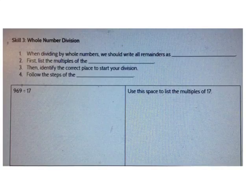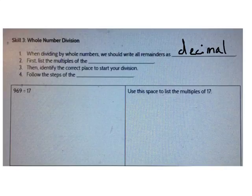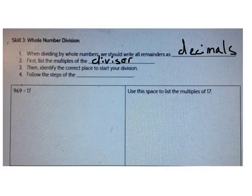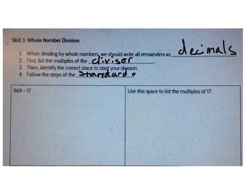We also talked about whole number division. Remember, now that we're in sixth grade, we're going to write all remainders as decimals. I can add a decimal point and two zeros after any problem. When I divide, first I'm going to list the multiples of the divisor. Then I'm going to identify the correct place to start my division. I'm going to follow the steps of the standard algorithm: divide, multiply, subtract, bring down. Let's start with an example.